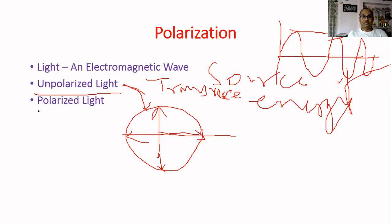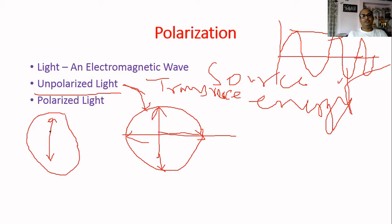Polarized light is when the vibration of particles is limited to only one particular direction — not in all directions, only in one particular direction. Then it will be called polarized light.